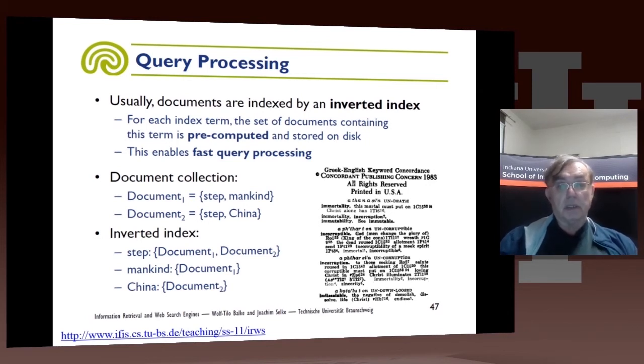And an inverted index, the words tell you which documents have them, so that's why it's inverted. It's a map of words to documents, whereas indices are a map of documents to words.